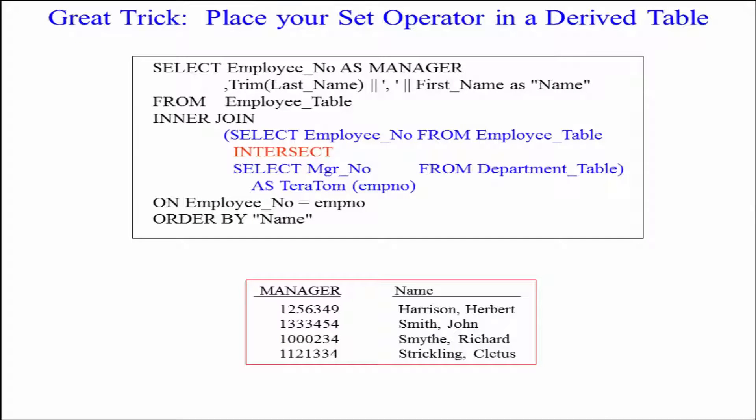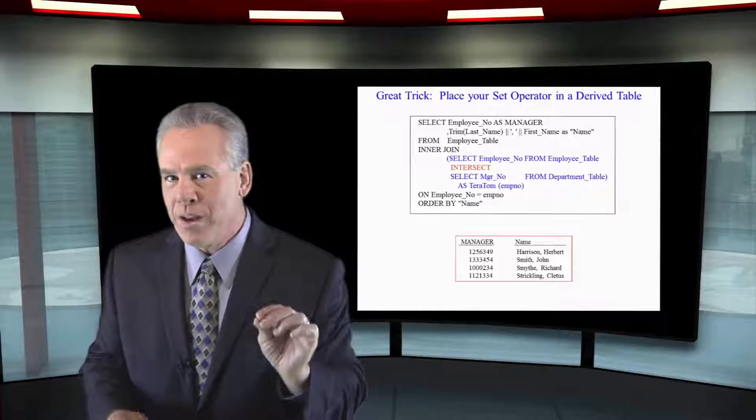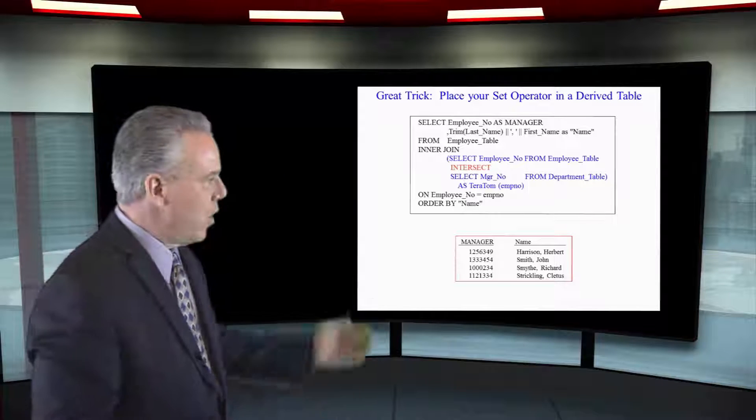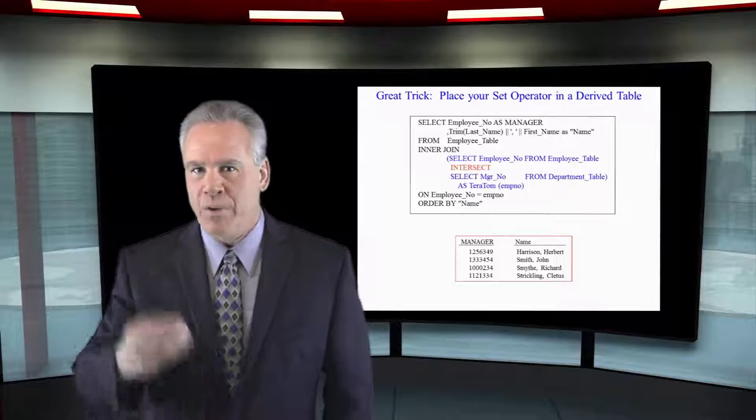Look what we're doing here. We're going to select the employee number. We're going to get the last name and concatenate that with the first name, so we'll get that full name from the employee table. And now we're going to inner join that and create a derived table. In the derived table, here's my set operator query. I'm going to select the employee number and do an intersect with the manager number.